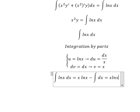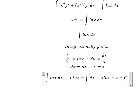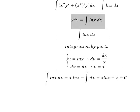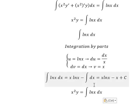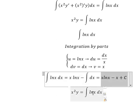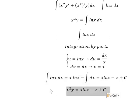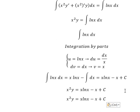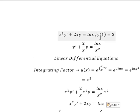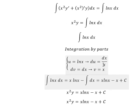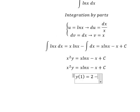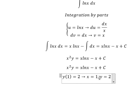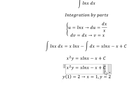Now we can simplify like this. We put this result here. Now we have the initial condition: when x equals 1, y equals 2. We put x equals 1 and y equals 2 in to find the value of C.